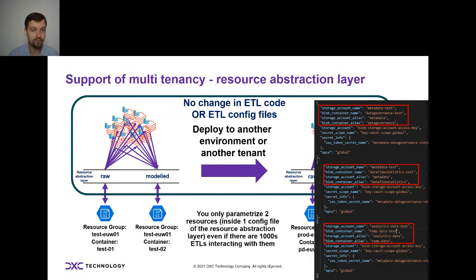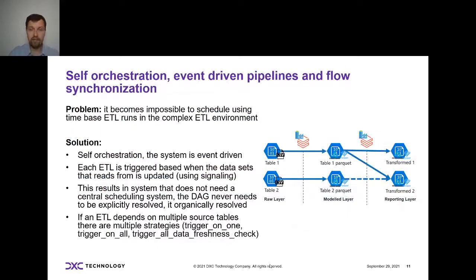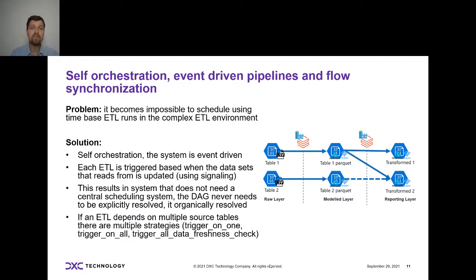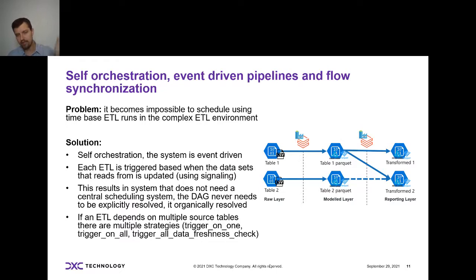Here's an example of how it actually looks. We literally have a component which is the resource abstraction layer, and you can see in the red square we have the storage account and blob container name, and then we have an alias. So we're aliasing resources and swapping the mappings. The 'modeled' container will be a different thing in test and different in prod, but the jobs just point to 'modeled' — they don't know where they're actually pointing in reality.